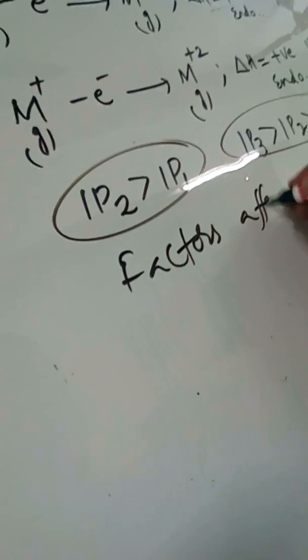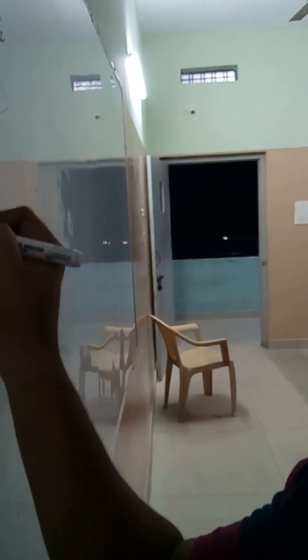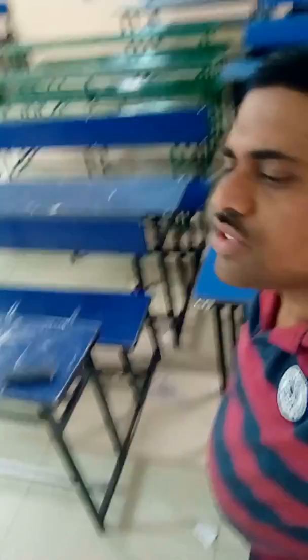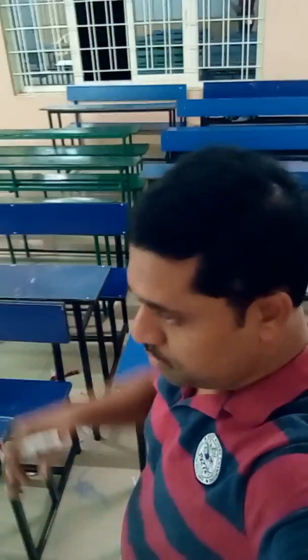Now let us look at the factors affecting ionization potential. The first factor is atomic radius, which is inversely proportional to ionization potential. When the size of the atom increases, the nucleus exerts less attraction on the outermost electrons, so we can remove electrons with less energy. Therefore, as atomic radius increases, ionization potential decreases.